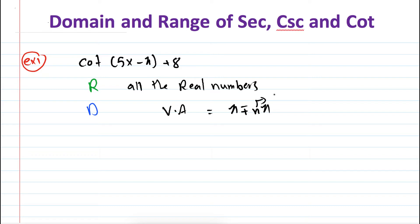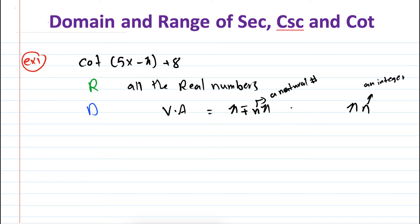n being a natural number. There is another way of writing this: if you just say the vertical asymptotes are at π times n, n being an integer. These two are the same thing.